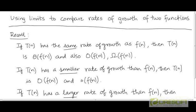Here is a paraphrased summary of what we have learned so far about the five different asymptotic notations that we have seen. If the function t has the same rate of growth as f, then t is θ, and it is also O and Ω. Recall that θ is the set of all functions having the same rate of growth as f. So if t has the same rate of growth as f, then t is going to be a member of this set θ.